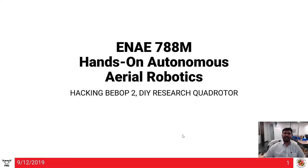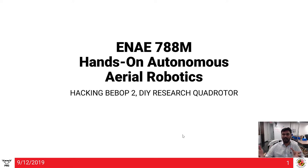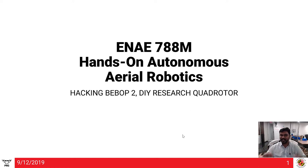Welcome back to ENAE 788M, Hands-On Autonomous Aerial Robotics. In the last part of this lecture, we talked about the different components which make an autonomous quadrotor. Now we will talk about how we hack an off-the-shelf Bebop 2, made by a company called Parrot in France, and how you can make your own research quadrotor from barebone components.